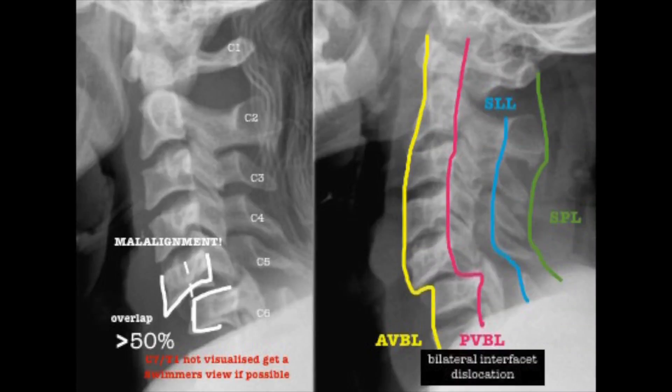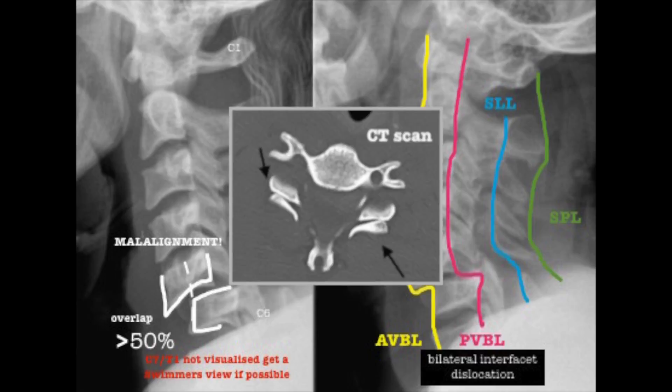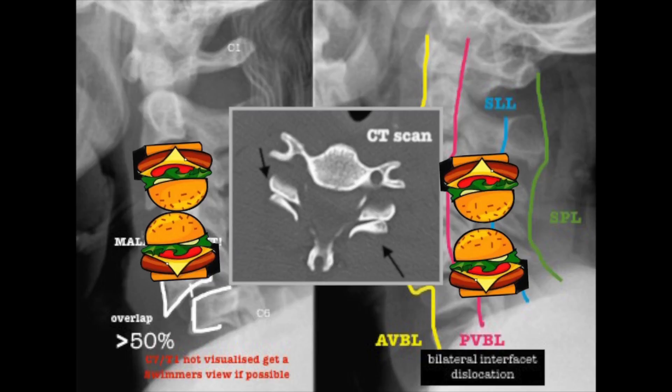The lateral view shows the C7-T1 space is poorly visible. There is malalignment of greater than 50% of the vertebral body at C5-C6, suggesting a bilateral interfacet dislocation. On AP view, there is no malalignment of the spinous processes as there is no rotation. On CT scan, you will find the inverted Berger sign bilaterally.